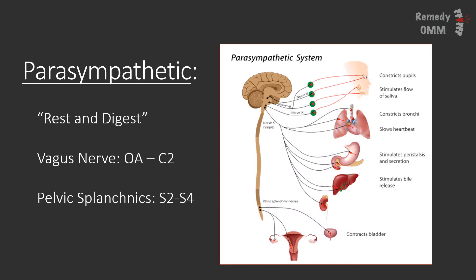Viscerosomatic reflexes can take the form of TART changes or another topic called Chapman's Points. Your parasympathetic system is responsible for your rest and digest response. Think of this system as how you feel when lying on the couch after a large meal — you're relaxed, blood flow is directed towards your intestines to support digestion, and maybe you start salivating at the sight of cake. The nerves responsible for your parasympathetics include some cranial nerves, but the most important are the vagus and the pelvic splanchnic nerves. The important levels to know are OA to C2 correlating to the vagus nerve, and S2 to S4 correlating to the pelvic splanchnic nerves.